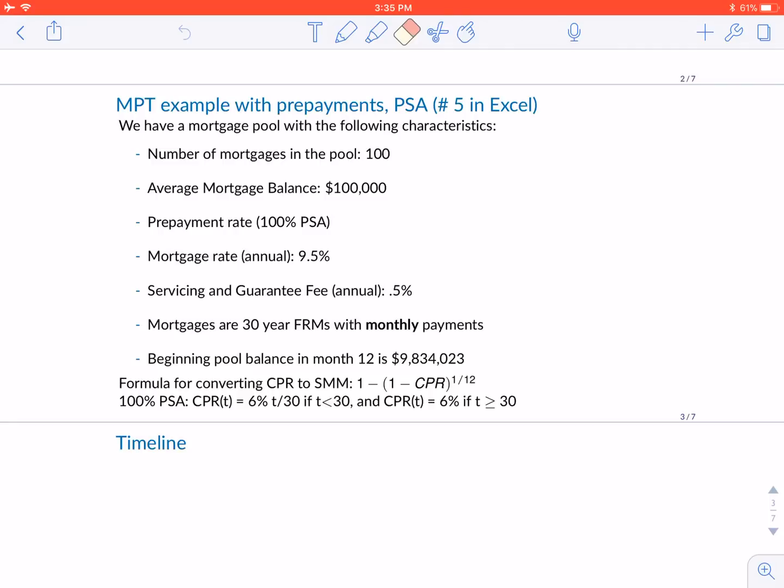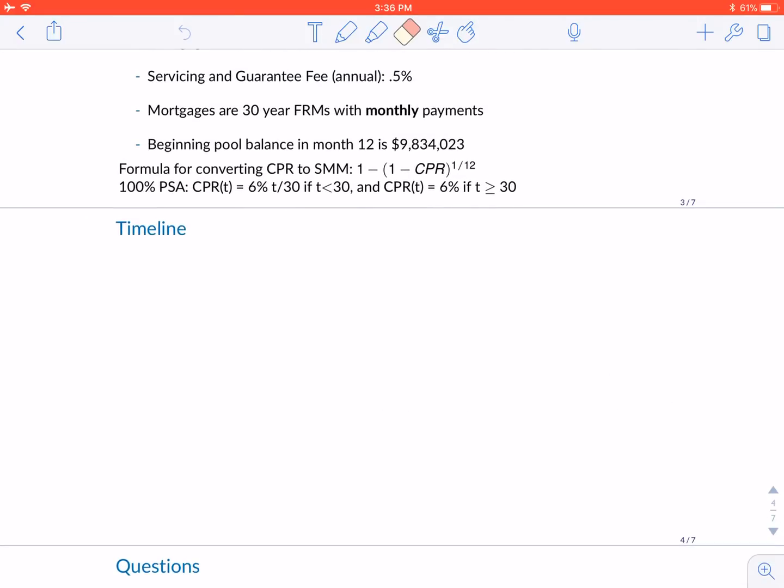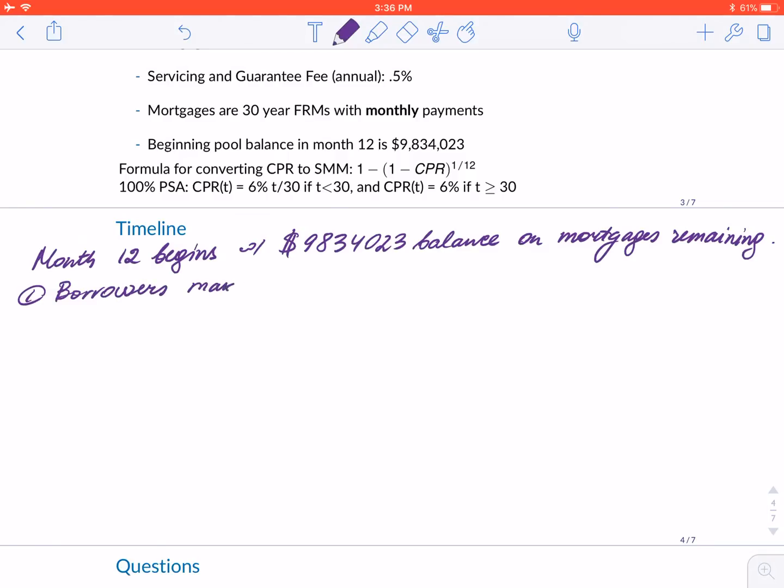Before we begin with questions, I wanted to outline the timeline of what happens with these mortgages. Month 12 begins with $9,834,023 balance on all mortgages remaining. The first thing that happens is borrowers who've taken out these 100 mortgages make scheduled payments.